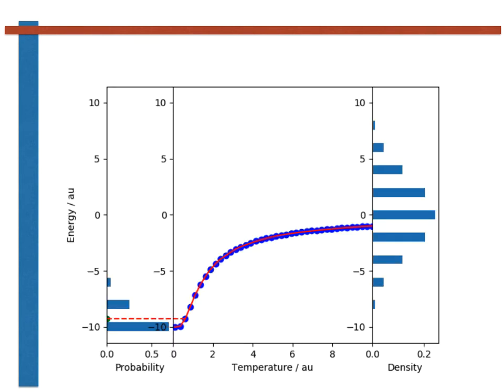These limits thus allow us to understand the behavior that we saw in this movie. At low temperatures, the distribution of energies is determined by the energies of the various microstates. As temperature is increased, however, the distribution of energies gets progressively closer and closer to the density of states.